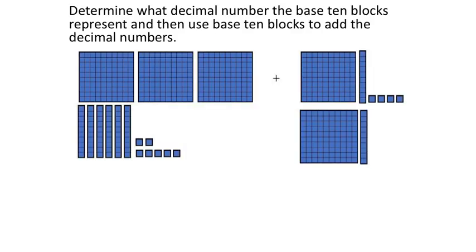They're going to say: add these up. Be careful, because even though this symbol is small, they may change it into a minus. Looking here, in terms of full blocks, let's count them: 1, 2, 3. And since we're adding, we can count these other ones too: 4 and 5. So in terms of whole blocks, we have 5 full units.